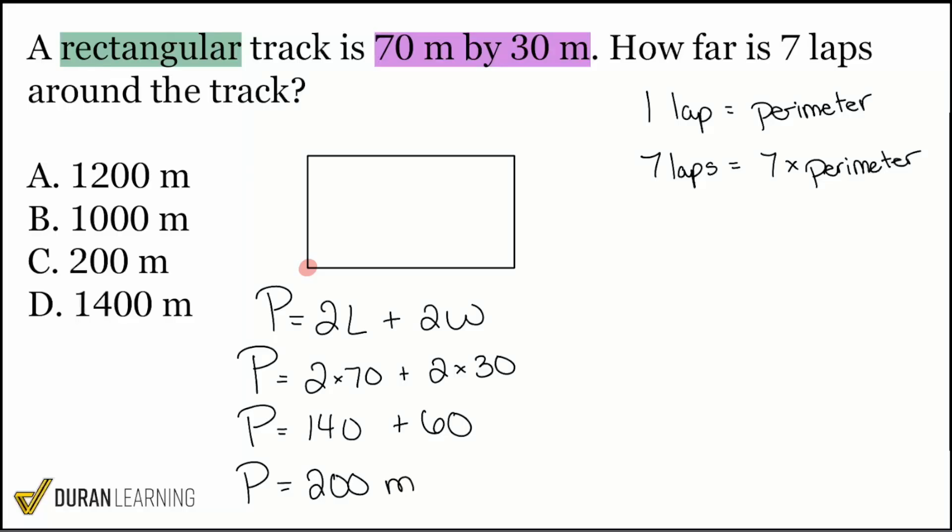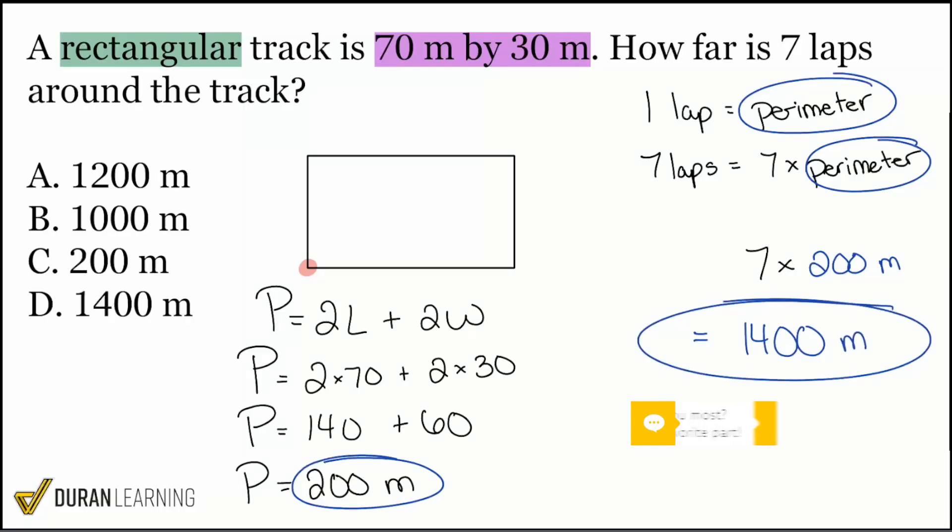Boom. So there we are. But the answer is not C, it's absolutely not. Because we said, once we find the perimeter, that we're going to multiply it by seven. So now we're going to do that here. Seven multiplied by 200 meters. That's going to give us 1,400 meters.